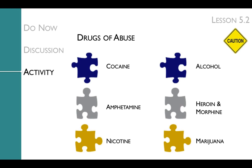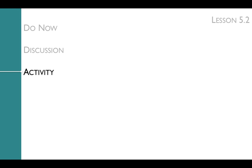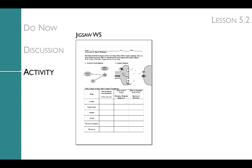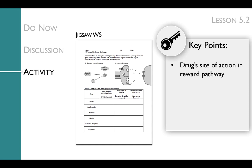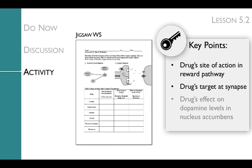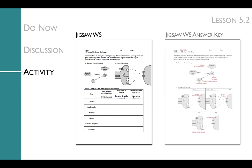To help students focus on the most important details of each of the case studies, give each student a jigsaw worksheet that has them take notes on the key points, which are the drug's site of action in the reward pathway, the drug's target at the synapse, and the drug's effect on dopamine levels in the nucleus accumbens. You can review all of this information in the jigsaw worksheet answer key. Additionally, the teacher primer and teacher manual will go over all the key scientific concepts about each of these drugs.